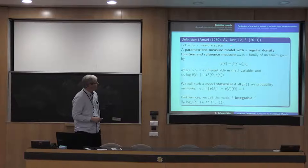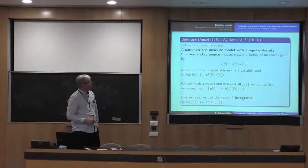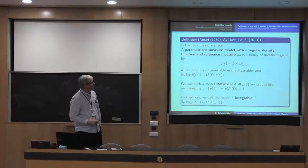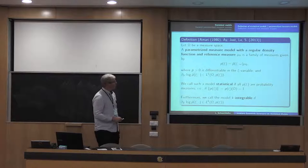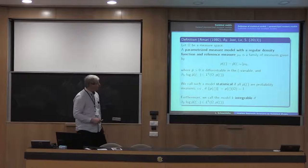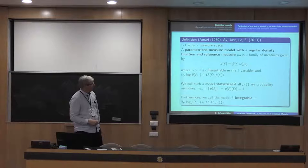In a parameterized measure model, you fix some background measure mu0. Then you get the measures by some density function p-bar, where psi is from your parameter space and omega is an element of the measure space. You require this to be positive because you want to take the logarithm of it. If you take the derivative in direction V — a tangent vector of the manifold — you get an L1 regular function. It is statistical if the norm equals 1, so all measures are probability measures. If the k-th power is also finitely integrable, we call it k-integrable.